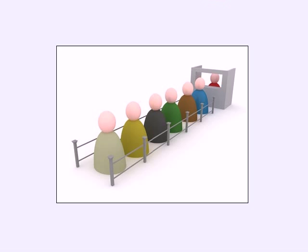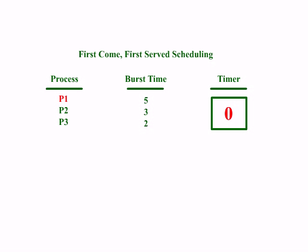Now let's look at an example. Suppose we have three processes: P1, P2, and P3. P1 is placed in the queue with a waiting time of 0 seconds, meaning P1 is the first process to be executed, and it takes 5 seconds for its execution — that is its burst time or execution time. Both terms mean the same thing. When the execution time of P1 is 5 seconds, P2 will definitely have to wait 5 seconds to get executed. So the waiting time of P2 is 5 seconds.